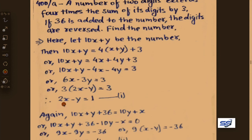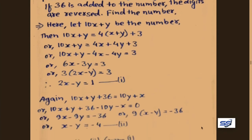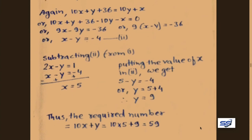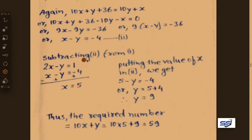First equation from first condition: 2x minus y equals 1. From second condition: x minus y equals minus 4. Subtracting equation 2 from equation 1 to solve.